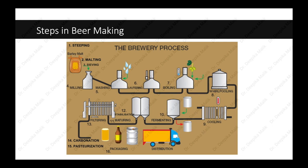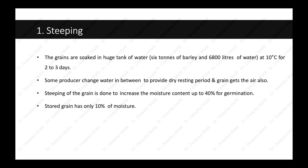The first step in the beer making process is steeping. The grains are soaked in a huge tank of water — six tons of barley and 6,800 liters of water at 10 degrees Celsius for two to three days. Some producers change the water in between to provide a dry resting period and allow the grain to get air. Steeping of the grain is done to increase the moisture content up to 40 percent for germination. Stored grain has only 10 percent moisture.